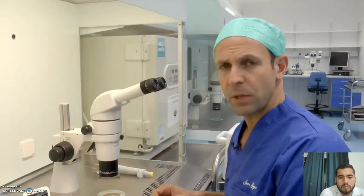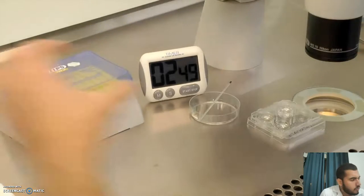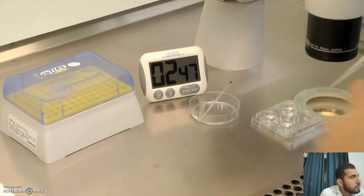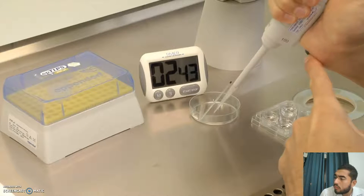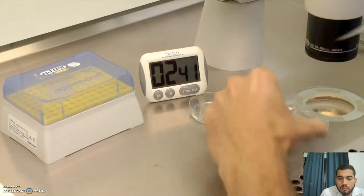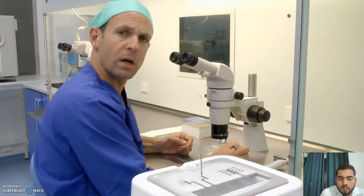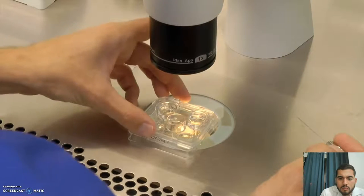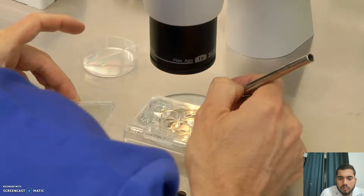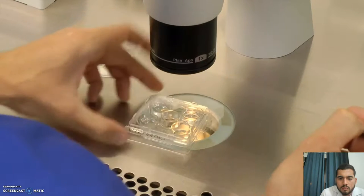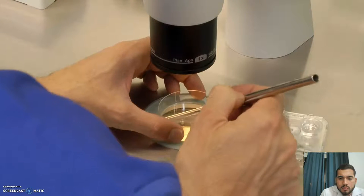When the oocytes have re-expanded, make a 20 microliter droplet from the third solution and place it onto your non-toxic surface. Once the oocytes have re-expanded or have reached 5 minutes in the second solution, whichever comes first, move them into the 20 microliter droplet. The oocytes should remain here for a minimum of 25 seconds.